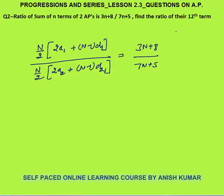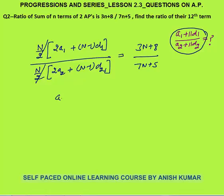The 12th term of the first AP is a1 plus 11d1, and the second AP is a2 plus 11d2 - that is what we need to calculate. The n by 2 cancels out. I need a1 plus 11d1 over a2 plus 11d2, but I have 2a1. So I divide numerator and denominator by 2, giving a1 plus (n minus 1 by 2) times d1 over a2 plus (n minus 1 by 2) times d2.